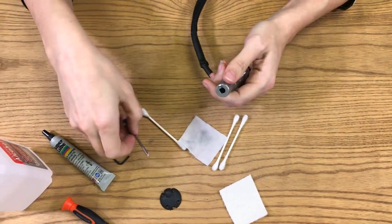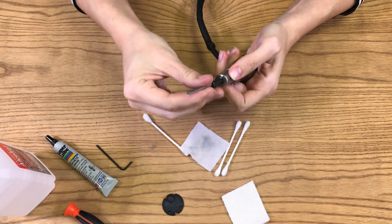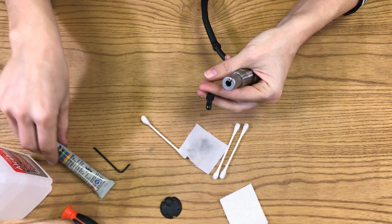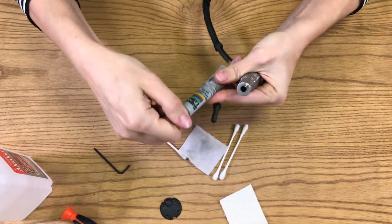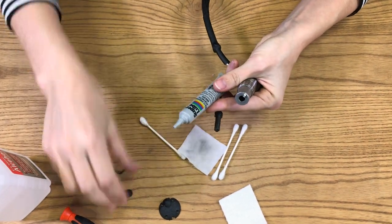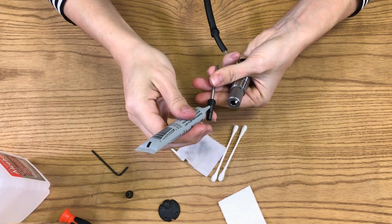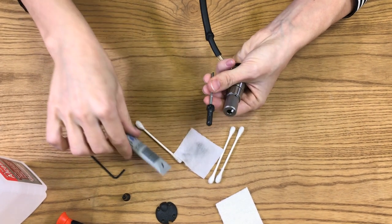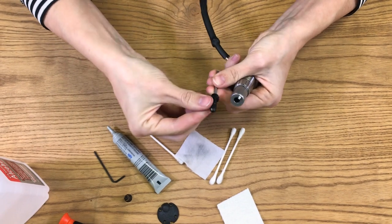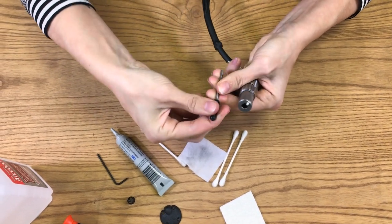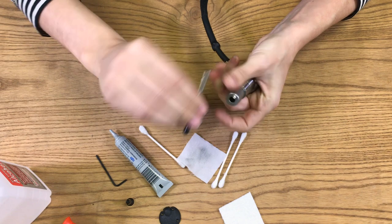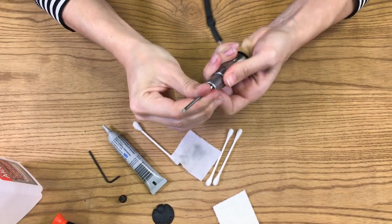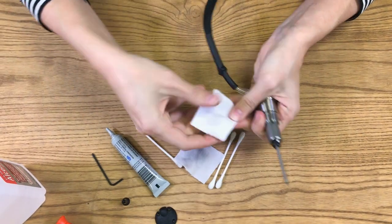If you're having problems with your tool sticking inside of the end of it, you can put a little bit of super lube onto your tool holder. Just rub it on there, and that should help with your tool sticking.